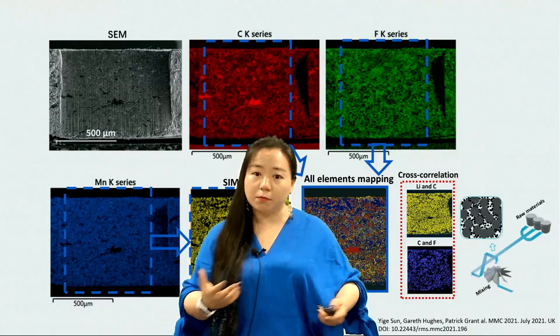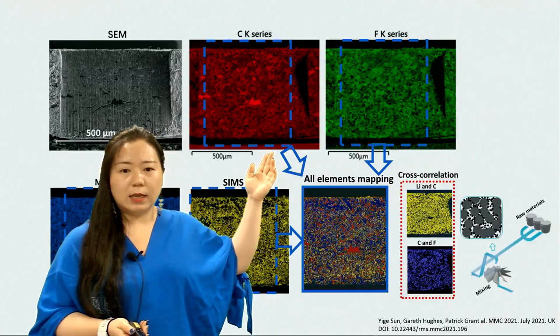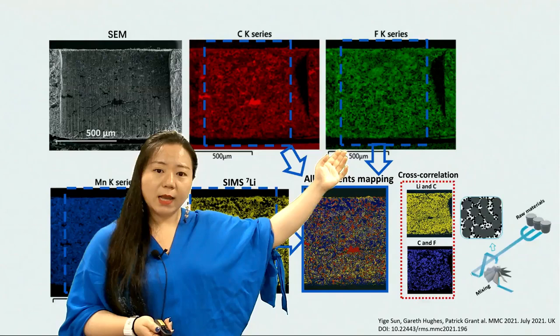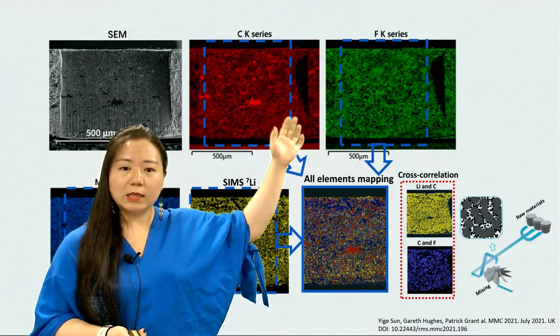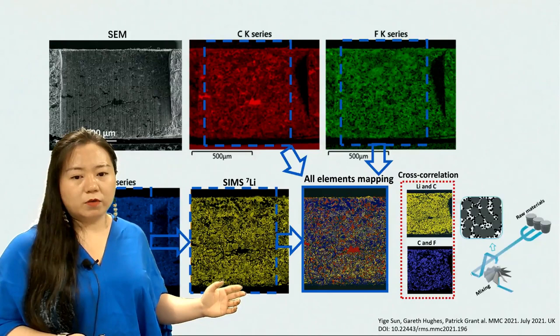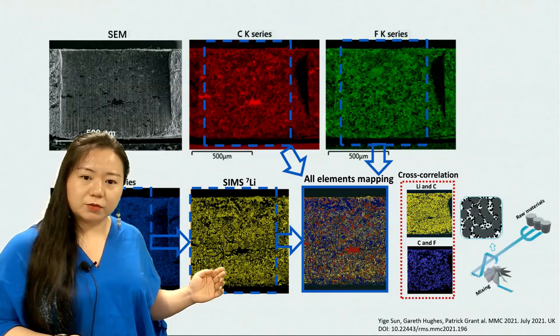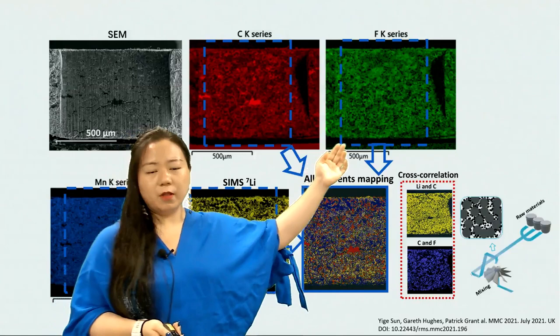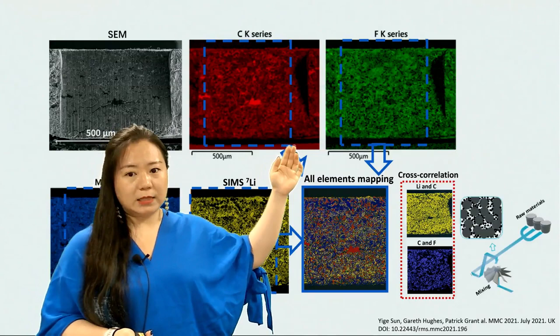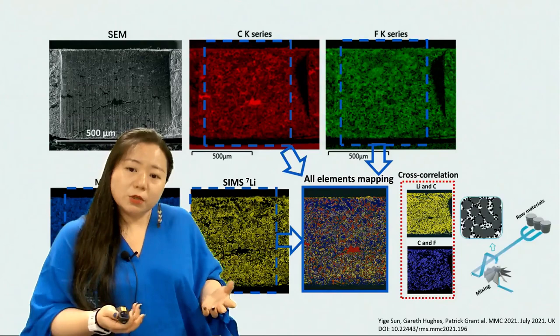Now let's take a look at the elemental analysis. Here is the carbon network of the electrode, and we are also able to detect fluorine, whose mapping overlaps most of the carbon network. Compared with this EDS mapping, the SIMS mapping is more sensitive. We could observe the delineation of the active material boundaries from the SIMS analysis. Since the fluorine mapping almost overlaps the carbon mapping, we assume the fluorine came from the binder — possibly PVDF.